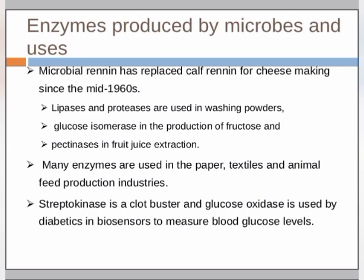Many enzymes are used in the paper, textile, and animal feed production industries. Streptokinase is a clot buster, and glucose oxidase is used by diabetics in biosensors to measure blood glucose levels.